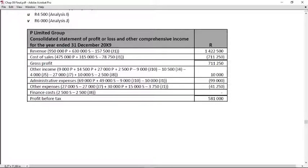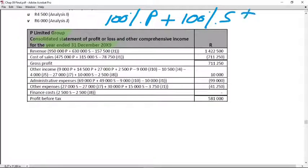If you refer to that for the P Limited Group consolidated SPLOCY for the year ended 31 December 20X9, what is my key principle behind every single line item? 100% P plus 100% S plus/minus consolidation journals.